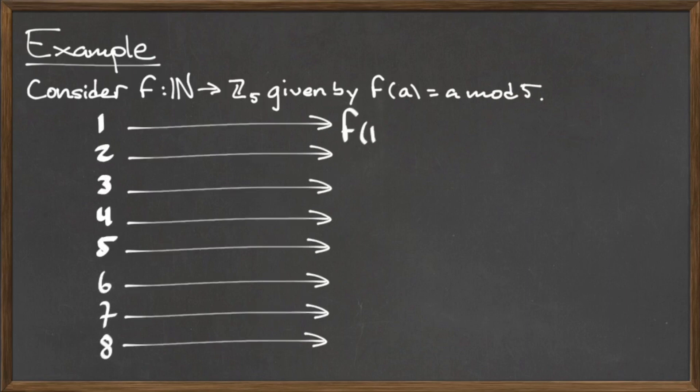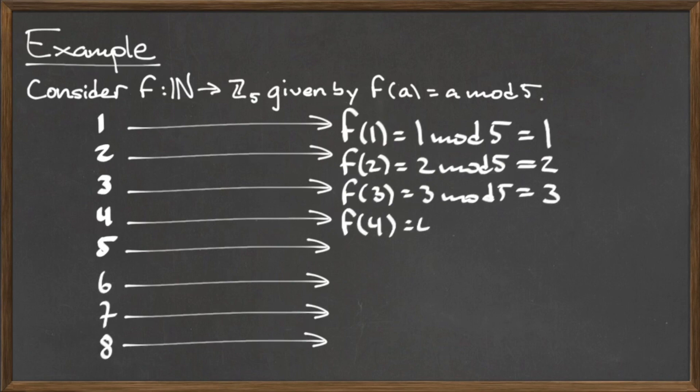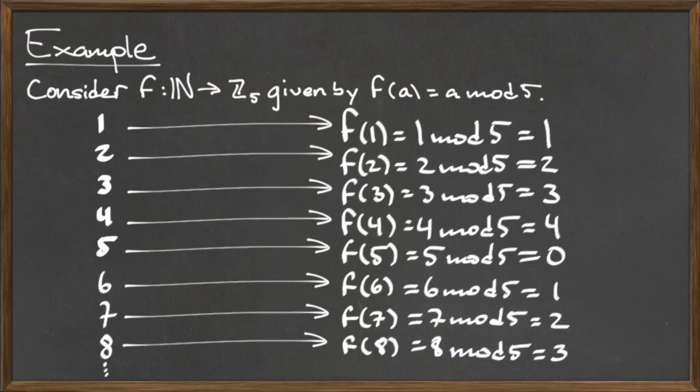To compute the image for each element in the domain, we simply take its value mod 5. The first 8 are shown here, and we can continue this pattern indefinitely.